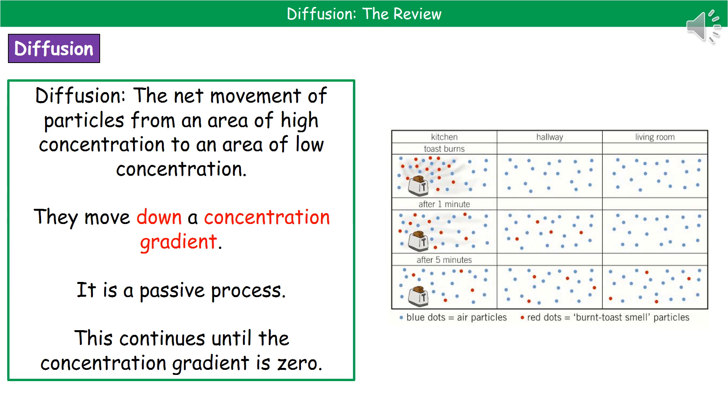And what we find is that the process of diffusion will continue until the concentration gradient is zero. So those particles will keep moving until eventually they're equally distributed, making the concentrations the same on each side, and therefore the concentration gradient is zero. And the little picture on the right there just shows you what's happening. So at the start, you can see that we've got all those little red particles of the burnt toast right over by the toaster. And then as time goes on, you can see that they're dispersing through the air itself.